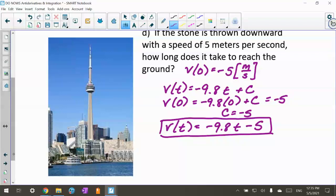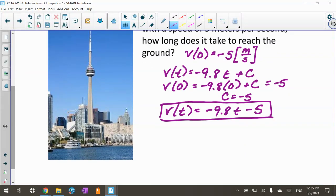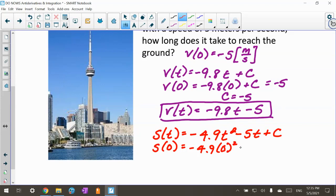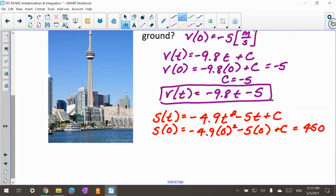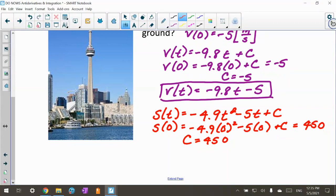They want to know how long it takes to reach the ground. I've got to come up with my new position function. My new position function s(t), doing the antiderivative, is negative 4.9t squared minus 5t plus c. I know s(0) is still 450, so c still comes out to be 450. My new position equation is s(t) equals negative 4.9t squared minus 5t plus 450.